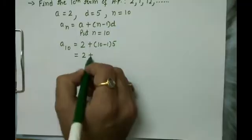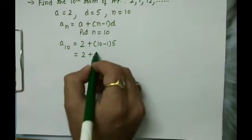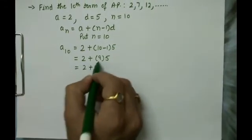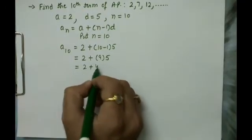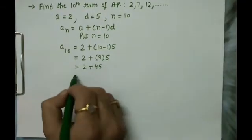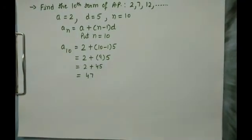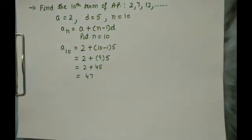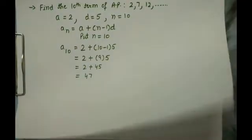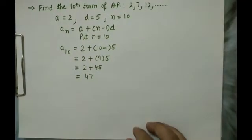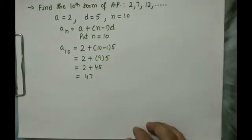Substituting the values: a is 2, n is 10, and d is 5. So a_10 equals 2 plus 10 minus 1 into 5. That is 2 plus 9 into 5, which equals 2 plus 45, giving us 47. The 10th term is 47. It is very easy to find the nth term using this formula.